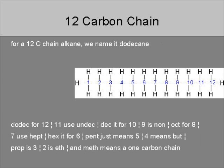For a twelve carbon chain alkane, we name it dodecane. Dodec is for twelve. Eleven uses undec, dec is for ten. Nine is non, oct is for eight. Seven uses hept, hex is for six. Pent just means five. Four means but, prop is three, two is eth.